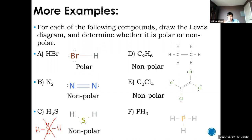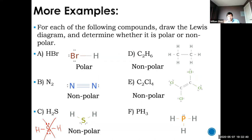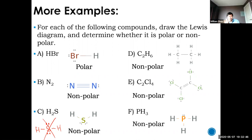Last one, PH₃: it looks like ammonia — same structure, but with phosphorus instead of nitrogen. Ammonia is polar, but PH₃ is nonpolar. Although it is asymmetric, phosphorus and hydrogen have essentially the same electronegativity — a difference of about 0.1, which is insignificant. So PH₃ is nonpolar because the electronegativity difference is too small.